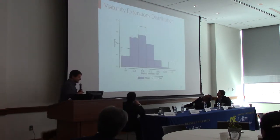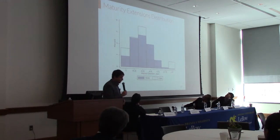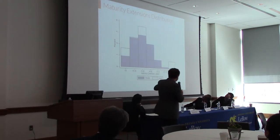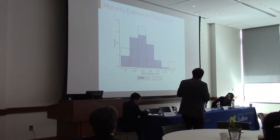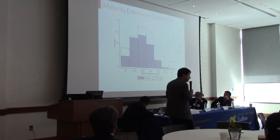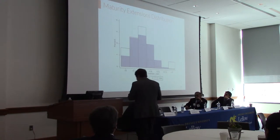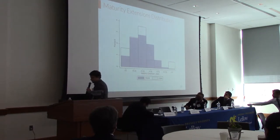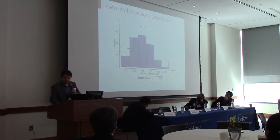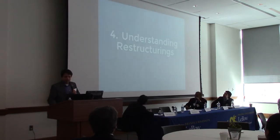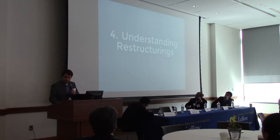The model can replicate the haircuts shown in the data, also their dispersion, and importantly the mean maturity extension and distribution of extensions. Both in the model and in the data there is rich dispersion in maturity extension, but maturity extensions are mostly positive around three or four years. We now use the model to understand restructuring.